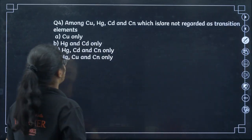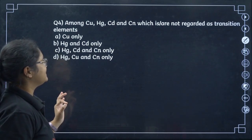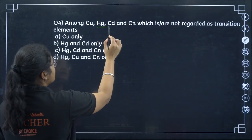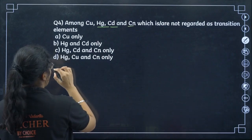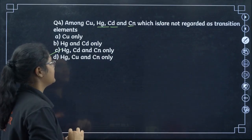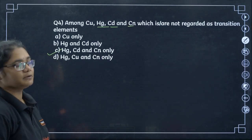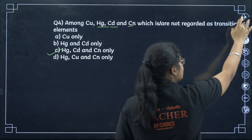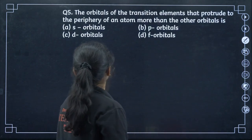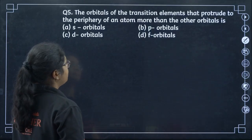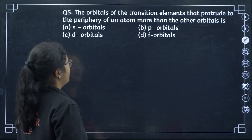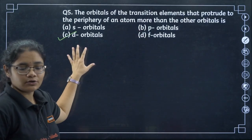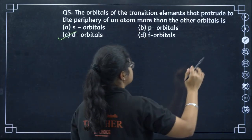Among copper, mercury, cadmium, and zinc, mercury, cadmium, and zinc are not considered transition elements because they have fully filled D orbitals in their ground state and also in their common oxidation state. Next, the orbital of transition elements that protrudes to the periphery of an atom more than others is the D orbital — option number C.